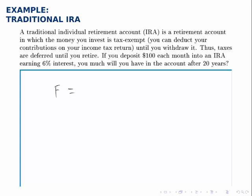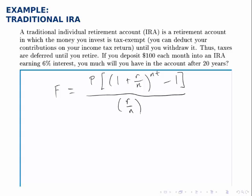F, the future value — meaning the amount that the account holds at the end of the 20 years — is equal to P. In this formula, P represents the regular deposit amount rather than a lump sum deposited today, so in this case P will be $100. Then times (1 + R/N), where R is the interest rate and N is the number of times per year that we make a deposit — in this case 12, because we're depositing each month. This is raised to the power of N·t minus 1, and all of this is divided by R over N.